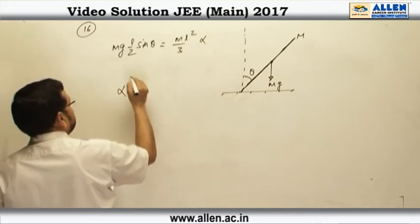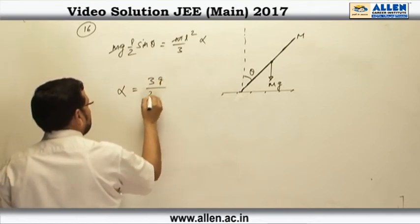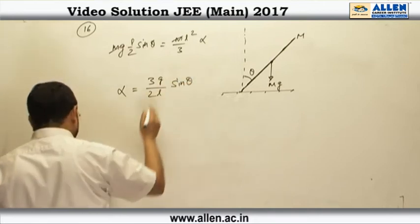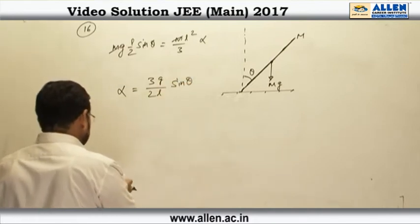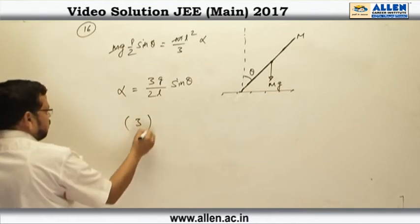So, alpha turns out to be m m gets cancelled alpha turns out to be 3 g over 2 l sin theta. So, the correct answer is going to be answer number 3.